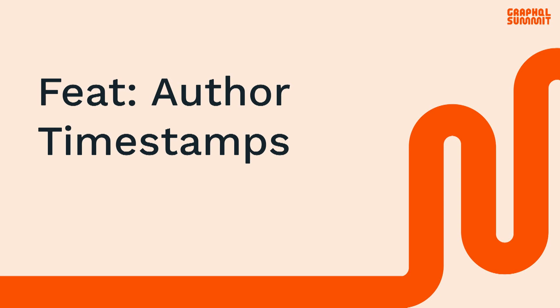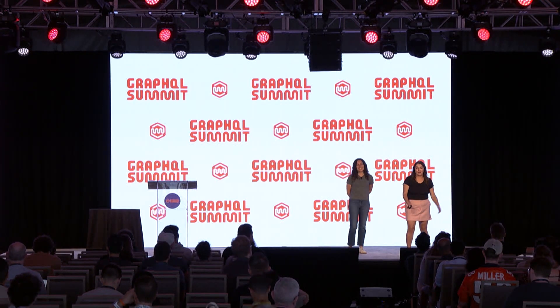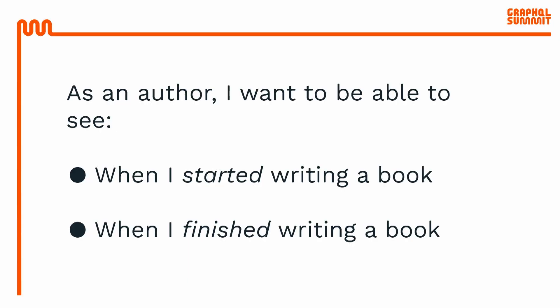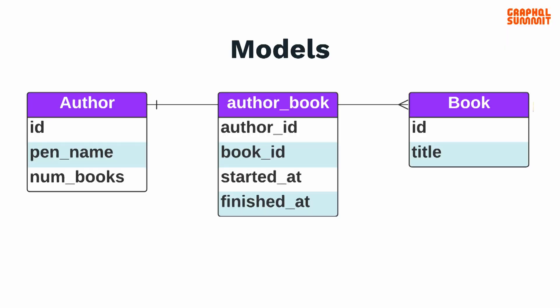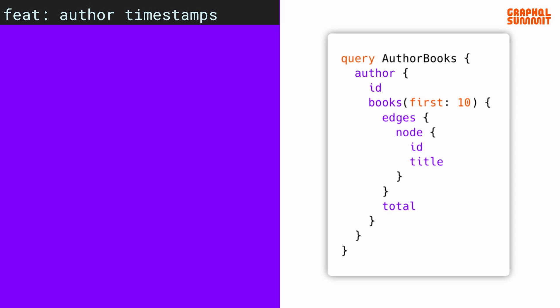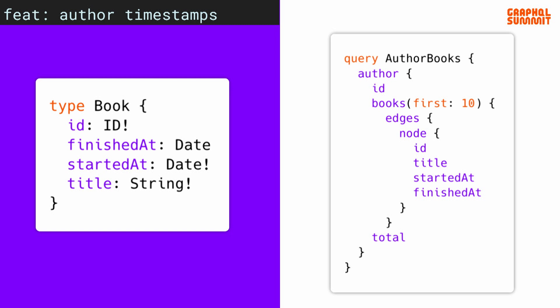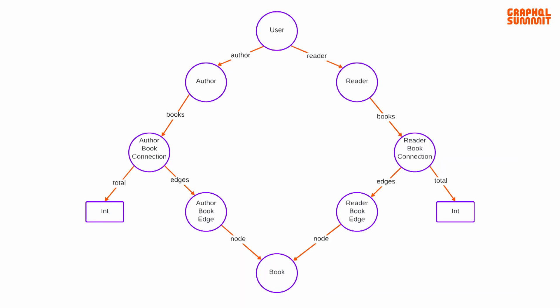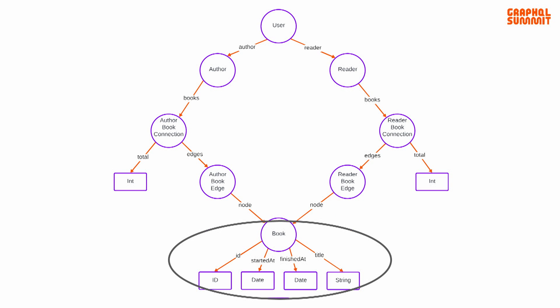Our next product requirement: as an author, I want to be able to see when I started writing a book and finished writing a book. We can imagine authors using our app to track their book writing progress. This data would naturally live on the join table in the modeling layer. Looking at the GraphQL query we already have for the author view, it would make sense to add those timestamp fields into the query on the book type. So we add started_at and finished_at to the book type, and the query looks good — we have all the data we need.